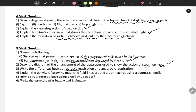Next, write the difference between aerobic respiration and anaerobic respiration. Next, explain the activity of drawing magnetic field lines around a bar magnet using a compass needle. Then, how do you detect a base using blue litmus paper?